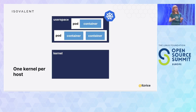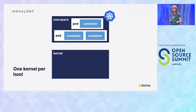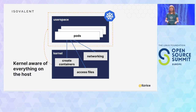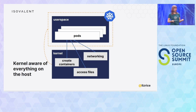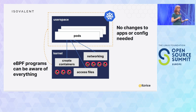In a Kubernetes environment, our applications are running inside containers inside pods. But all of the containers in all of the pods on any given node are sharing one kernel. That means whenever our applications want to do anything interesting, that kernel on that virtual machine or bare metal machine is involved. The kernel is aware of everything happening in all of our applications on that Kubernetes node. So if we instrument that machine with eBPF and attach to the right events, we can build tooling that's aware of all of those applications without needing to change anything about those applications or how they're configured.